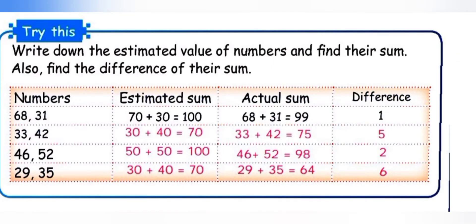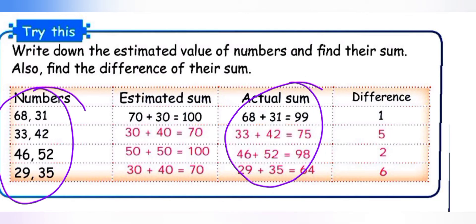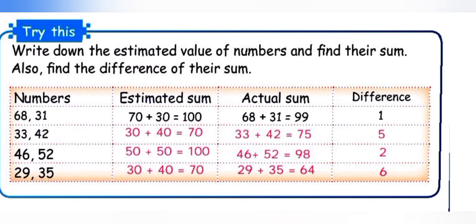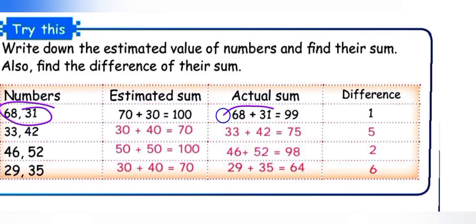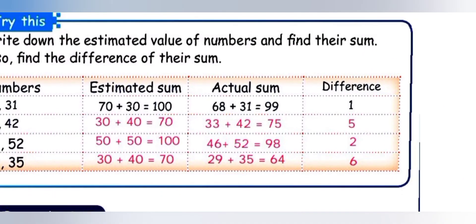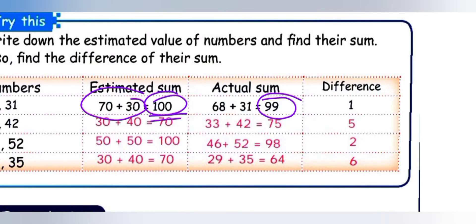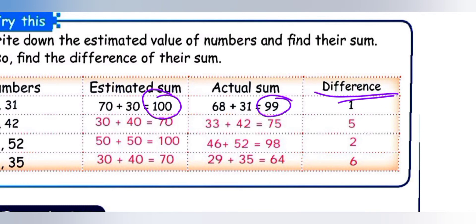Try this: Write down the estimated values of numbers, find their sum, and find the difference between estimated sum and actual sum. First: 68 plus 31. Actual sum is 99. Estimated: 68 — ones place 8 is more than 5, so 6 tens becomes 7 tens, giving 70. 31 — ones place 1 is below 5, so 3 tens stays 30. Estimated sum: 70 plus 30 equals 100. Difference: 100 minus 99 equals 1.